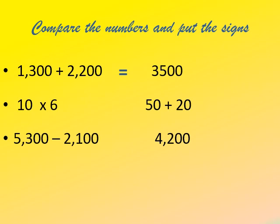In the second example, on the left we have 10 × 6, which is 60. On the right we have 50 + 20, which is 70. Comparing 60 and 70, since 70 is greater than 60, we put the correct sign with the symbol's mouth open towards the right side, towards 70.